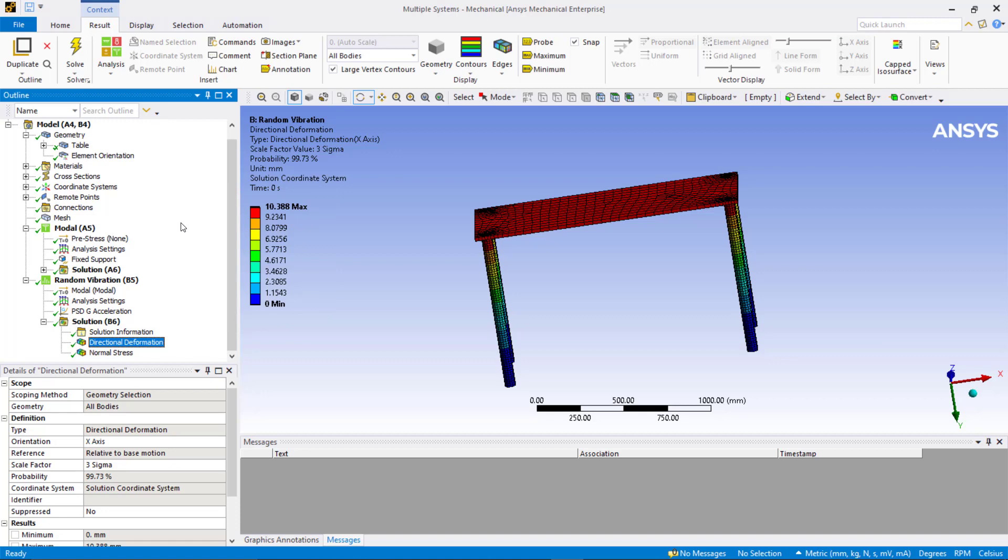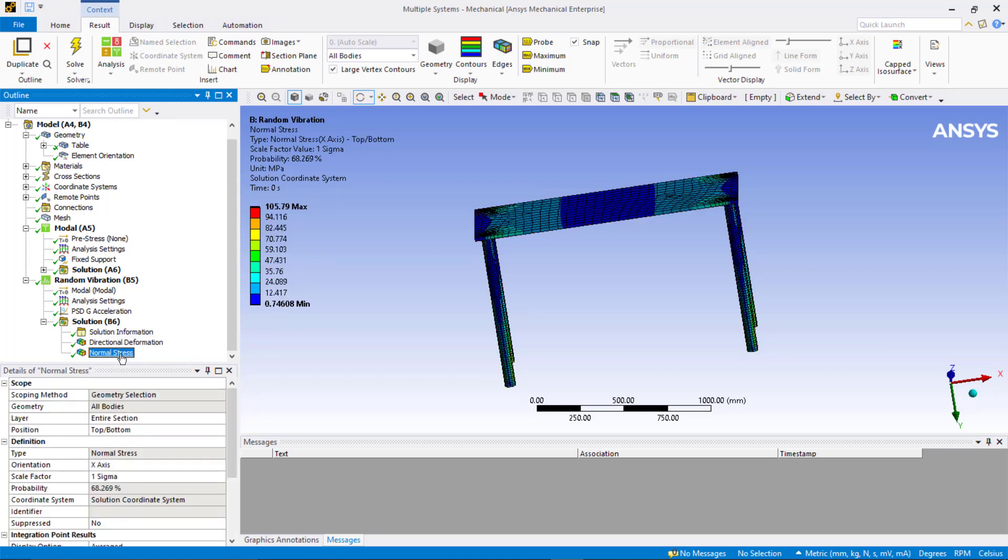Next, let's plot normal stress in x-direction. The 1 sigma value result shows that there is 68.3% probability that the normal stress in x-direction will be at or below 105.7 MPa.